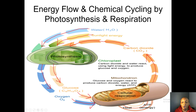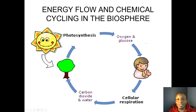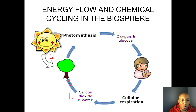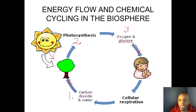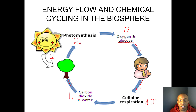Each process needs the other in order to survive. Plants and trees take in carbon dioxide, water, and sunlight to produce food through photosynthesis, giving off oxygen as a byproduct. The human takes in that oxygen and glucose in the form of food to start cellular respiration, which gives them energy in the form of ATP inside the mitochondria. The byproducts produced by the human are carbon dioxide and water.